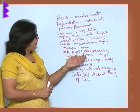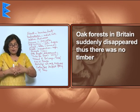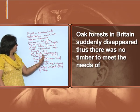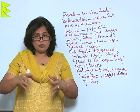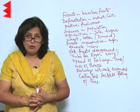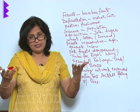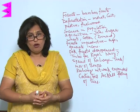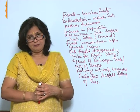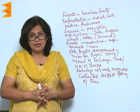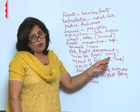Next, the oak forests in Britain suddenly disappeared, so there was no timber to meet the needs of the Royal Navy. The ships that had to be made needed a regular supply of timber. Since the oak forests had disappeared, the forests that had to meet these requirements were of course the Indian forests, and thus the Indian forests were cleared for meeting the needs of the Royal Navy ships.